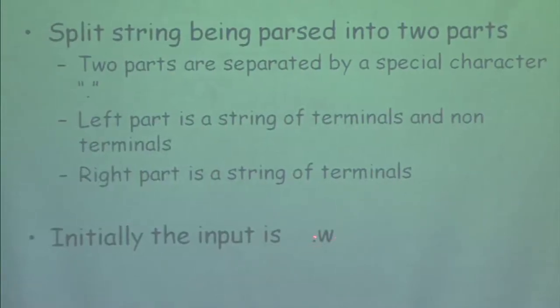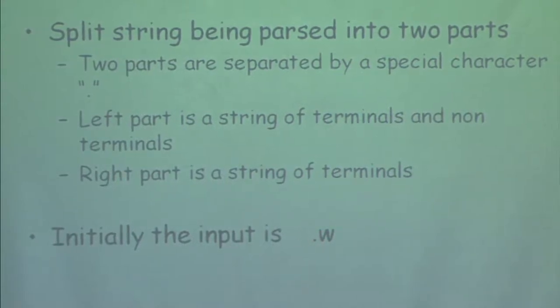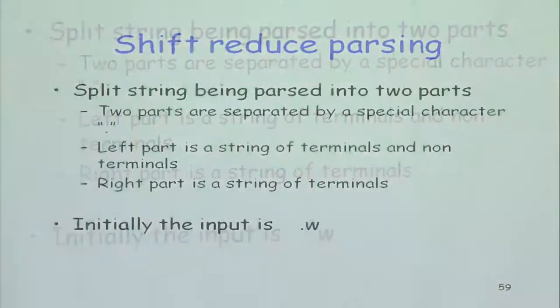Initially, the dot is on the left-hand side of the string I am trying to match. The final position is that on the right-hand side of the dot will be null and on the left-hand side will be the start symbol. From the initial position I have to determine under which situations I do a shift and under which situations I do a reduce. I have a choice between doing either a shift or a reduce.